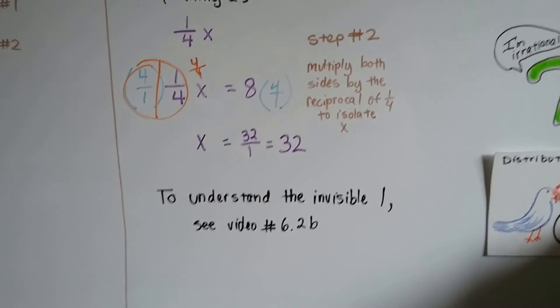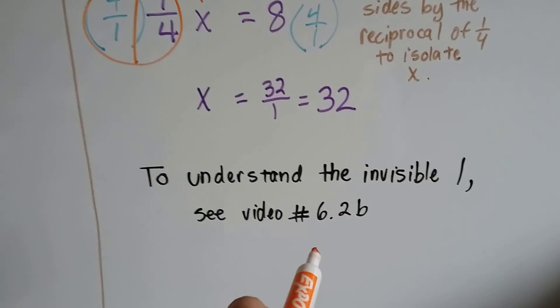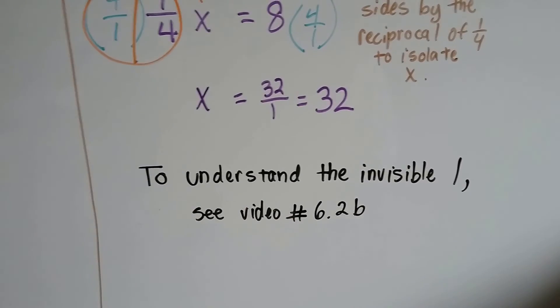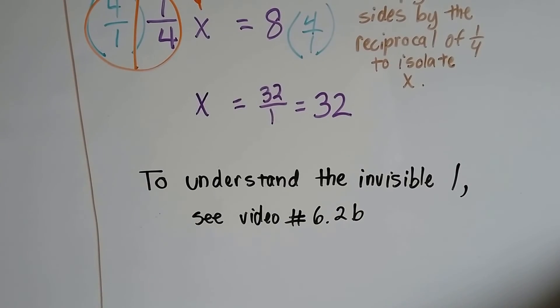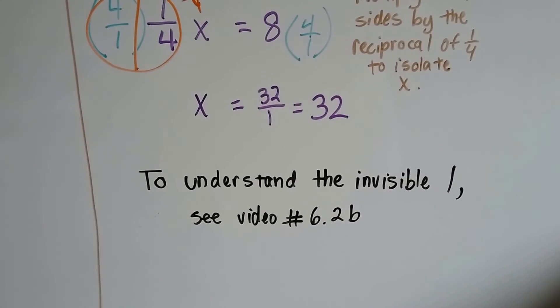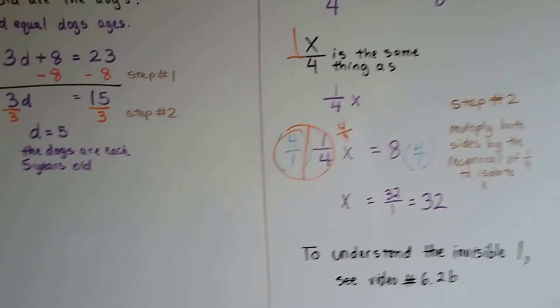Now, if you don't understand that invisible 1, my advice is to go back a couple videos to 6.2b and watch my video about the invisible 1 and the lonely variable. It'll help you.